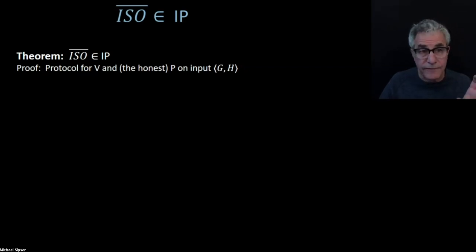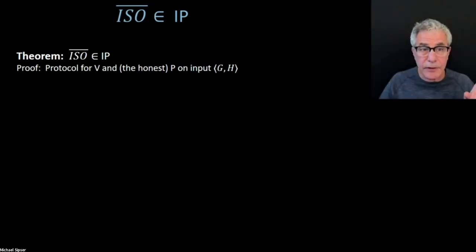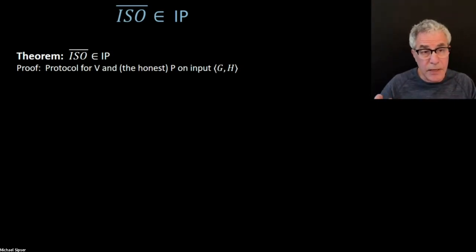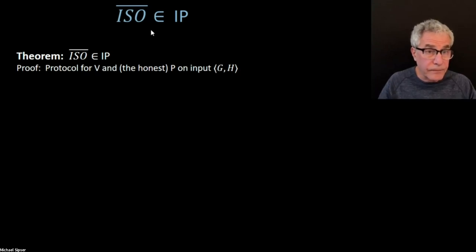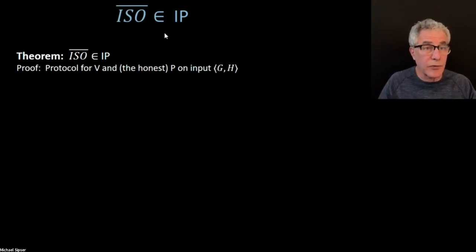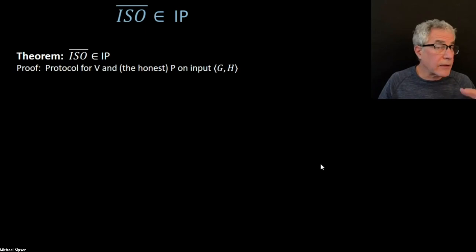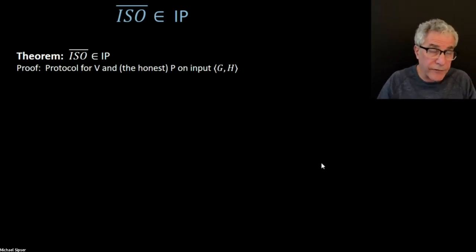We're going to revisit that previous example about non-isomorphism, but now in the context of thinking about it as a language. We're going to take the non-isomorphism problem and show that it's in IP. So there's going to be a verifier together with a prover which are going to make the verifier accept with high probability for strings in the language — namely graphs not being isomorphic — and there will be no way to make the verifier accept with high probability for strings out of the language, that is when the graphs are isomorphic.